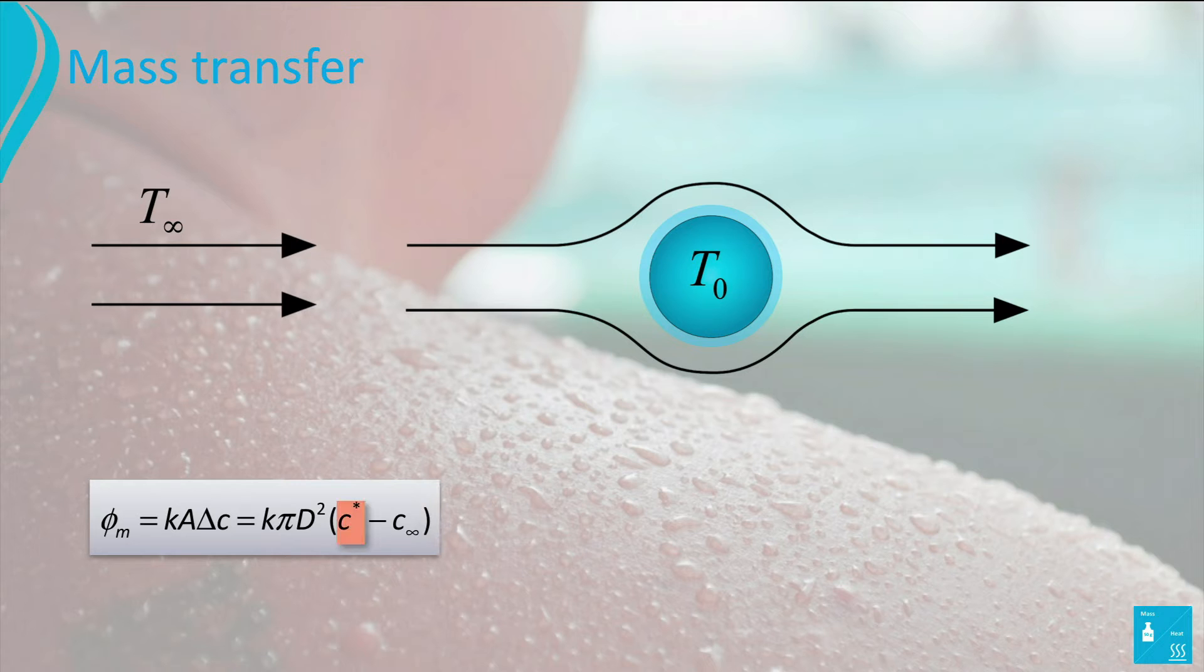In this equation, C* is the concentration of water in the saturated air around the droplet, and C_∞ is the concentration of water present in the air. If we assume that water vapor is an ideal gas, we can rewrite this equation into the following formula.